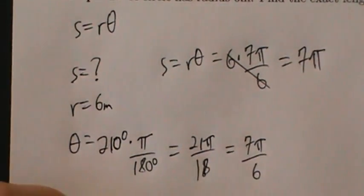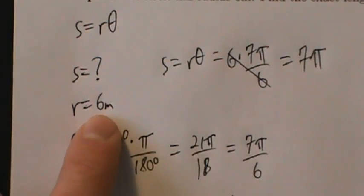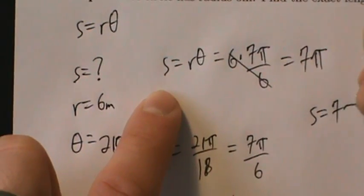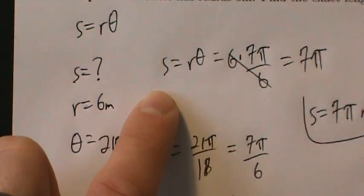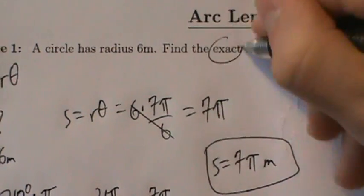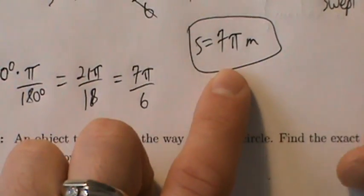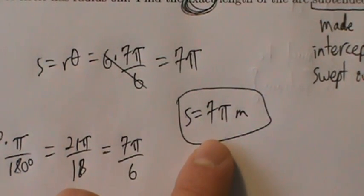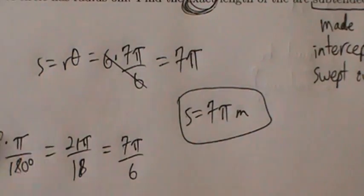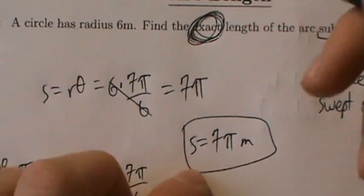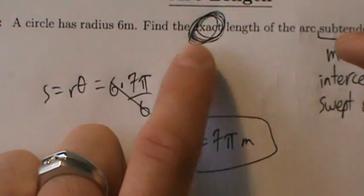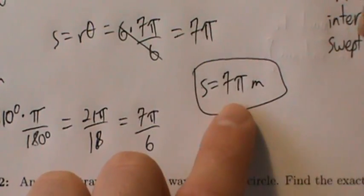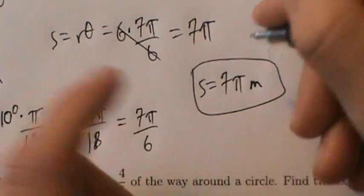Be careful to put the right units. R was in meters, so s is going to have the same units — so s = 7*pi meters. Also be careful: this says 'find the exact length,' so don't toss this into a calculator and approximate. Pi is about 3.14, so 7 times that gives about 21-point-something — but don't do that. 'Exact length' means leave your answer in terms of pi. So 7*pi meters is the answer.